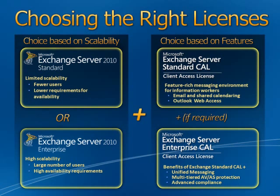The edition of the server is chosen, and then we come down to CALs. The Standard CAL of Exchange covers the basic email and calendaring side of things, along with web access and mobile access. Whereas the Enterprise CAL covers unified messaging — answer phone messages coming into your inbox — anti-virus, anti-spam protection, the whole compliance area of Exchange, and things like voice access, being able to telephone the Exchange Server. So it is always a case of choosing the Standard or Enterprise Edition of Server, and then the Standard or Standard and Enterprise CALs, based on the functionality required.